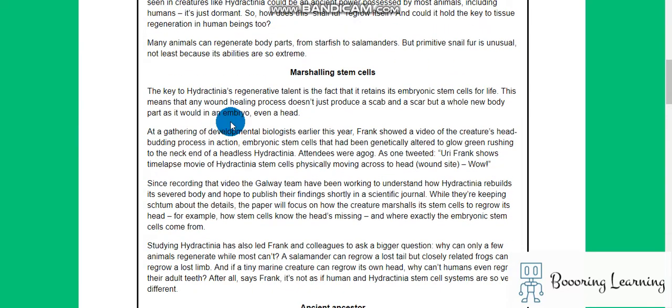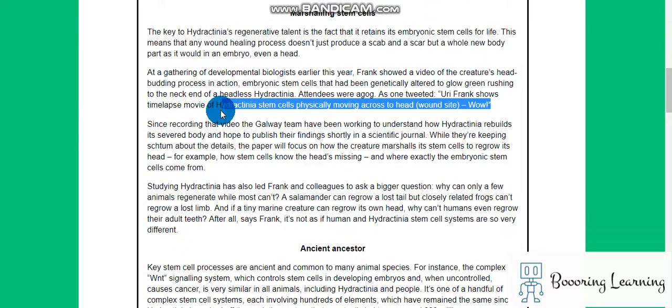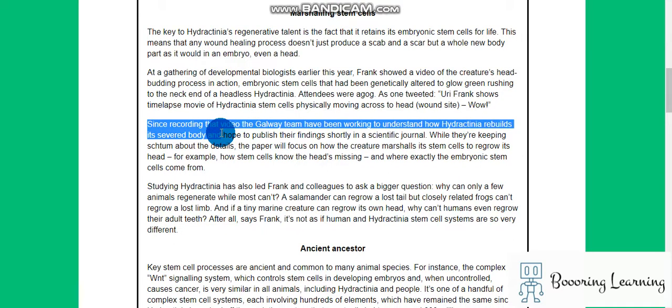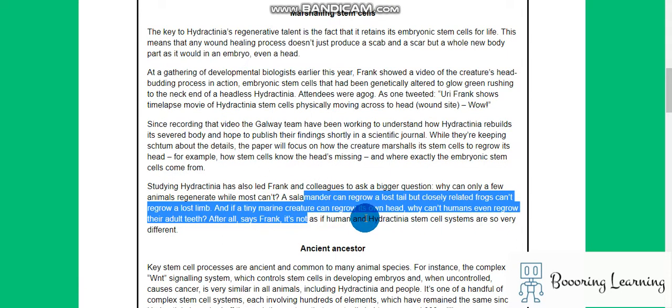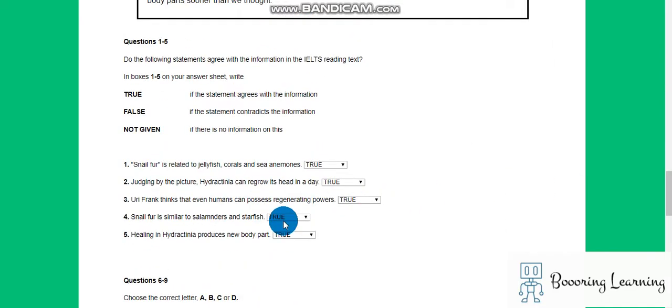A salamander can regrow a lost tail, but closely related frogs can't regrow a lost limb. And if a tiny marine creature can regrow its own head, why can't humans? Even though they grow their teeth, after all, says Frank, it's not as if humans are so very different. Okay, kind of yes, but okay. Snail fur is similar to salamanders and starfish.